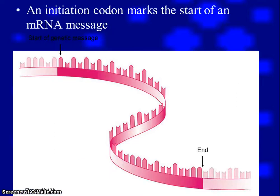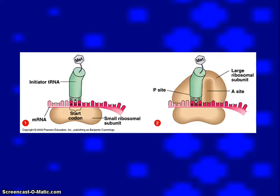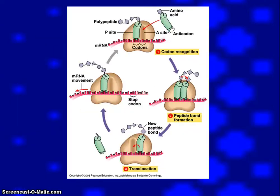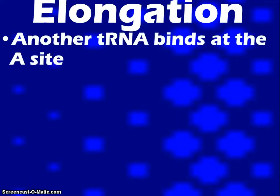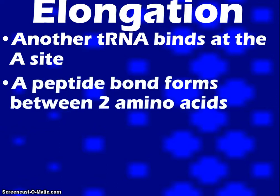The next step is elongation. Elongation takes about 60 milliseconds to add on each base. A tRNA is going to look at the next three letters, or the codon, and it's going to bring in another amino acid. A peptide bond is going to form between those two amino acids, and that first tRNA will leave so it can go bring in some more.